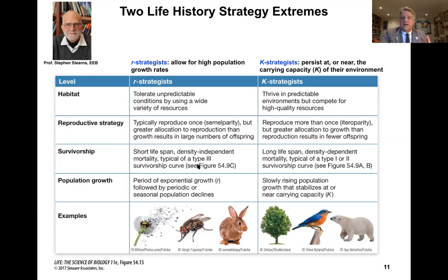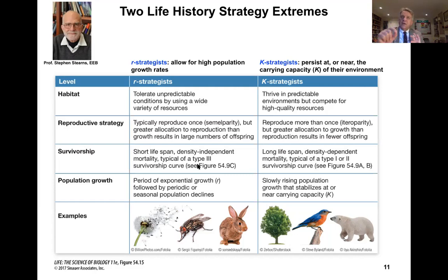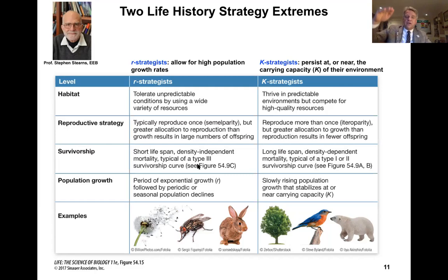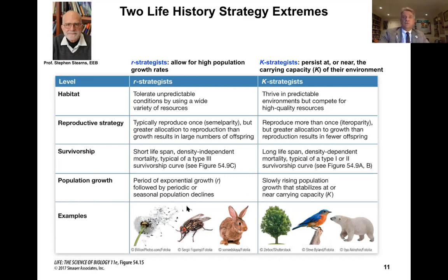K-strategists tend to have a Type I or Type II survivorship curve. For population growth in R-strategists, that period of exponential growth is followed by a periodic or seasonal population decline. Whereas with K-strategists, population size slowly grows and stabilizes at or near the carrying capacity. Here are examples of organisms that fall broadly under these two extreme life history strategies — R-strategists and K-strategists.